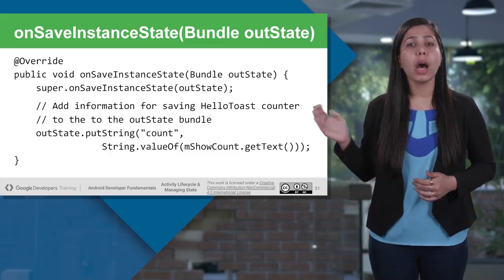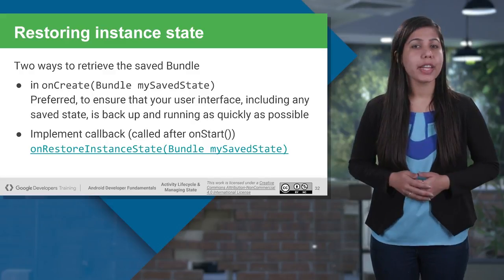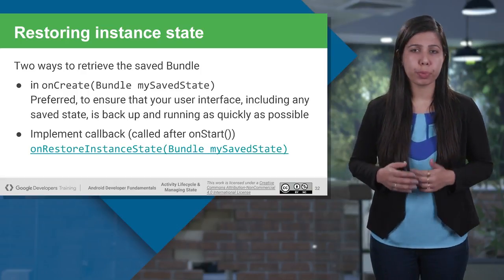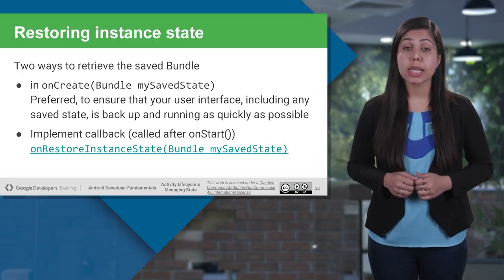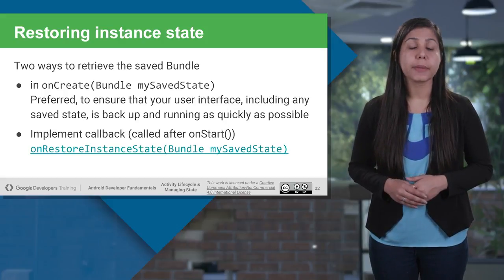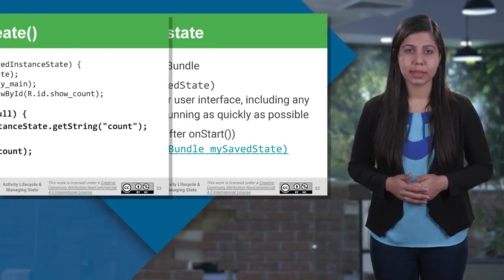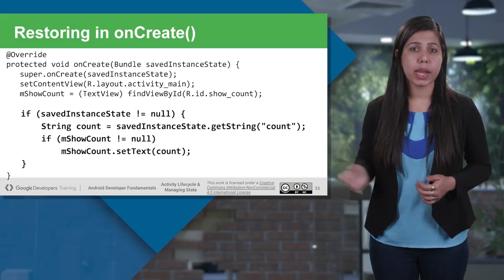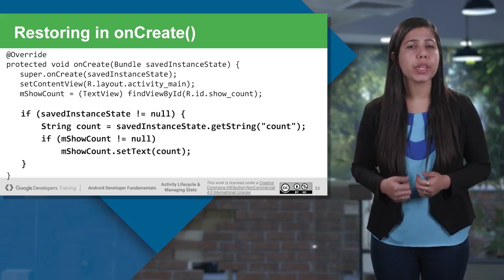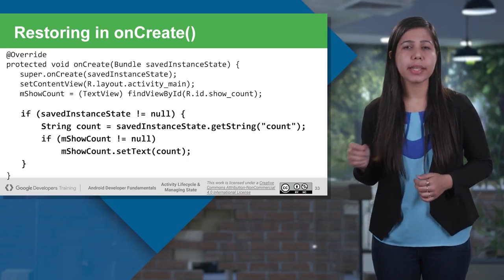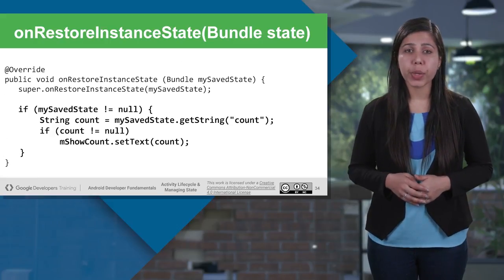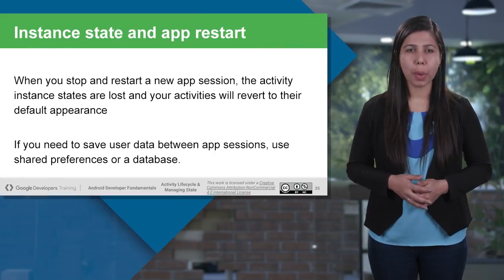Whenever our application is destroyed, we store the state. When our application is recreated, we restore that state. This can be done in two ways: either using onCreate, which is more preferred as it ensures your user interface including any saved state is back up and running as quickly as possible; or by implementing the onRestoreInstanceState callback which is called after onStart. If savedInstanceState doesn't equal null, we can retrieve our message using savedInstanceState.getString with our key "count" and restore the value. The same can be done in onRestoreInstanceState.